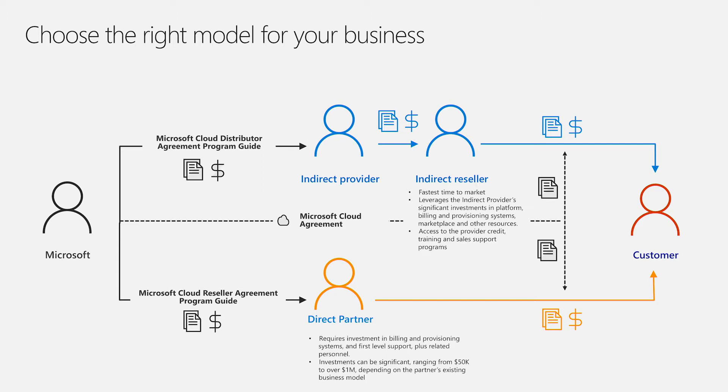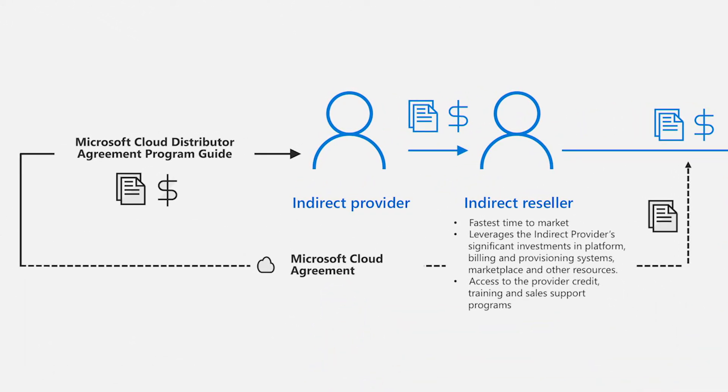What are your options as becoming a CSP? You have two options to both procure it as well as become one. There is the direct partner and the indirect provider model. Both have benefits that you as a customer or partner may be more inclined to take. In the indirect provider model, you have a large CSP corporation focused on reselling the infrastructure, and an indirect reseller handles the rest. If you are a small company requiring lots of speed to come to market fast, and want to leverage the billing and support capabilities of a large enterprise, the indirect path is for you.